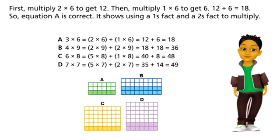12 plus 6 equals 18. So, equation A is correct. It shows using a 1's fact and a 2's fact to multiply.